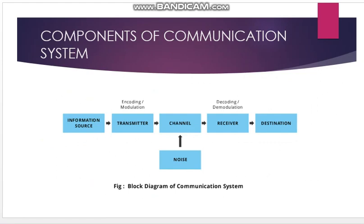That is the basic component of the communication system. The basic block diagram shows: information source, transmitter, channel, receiver, and destination — with noise present in the channel. There will always be noise in the channel because a practical channel is never perfect — there are different kinds of noise, which we will learn about in coming weeks.